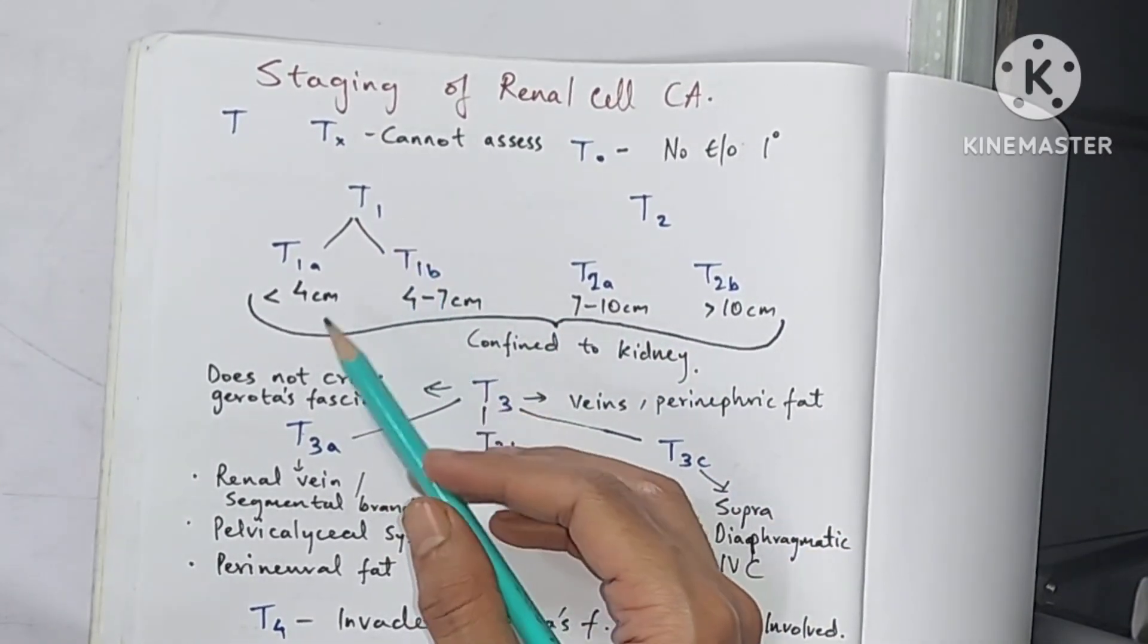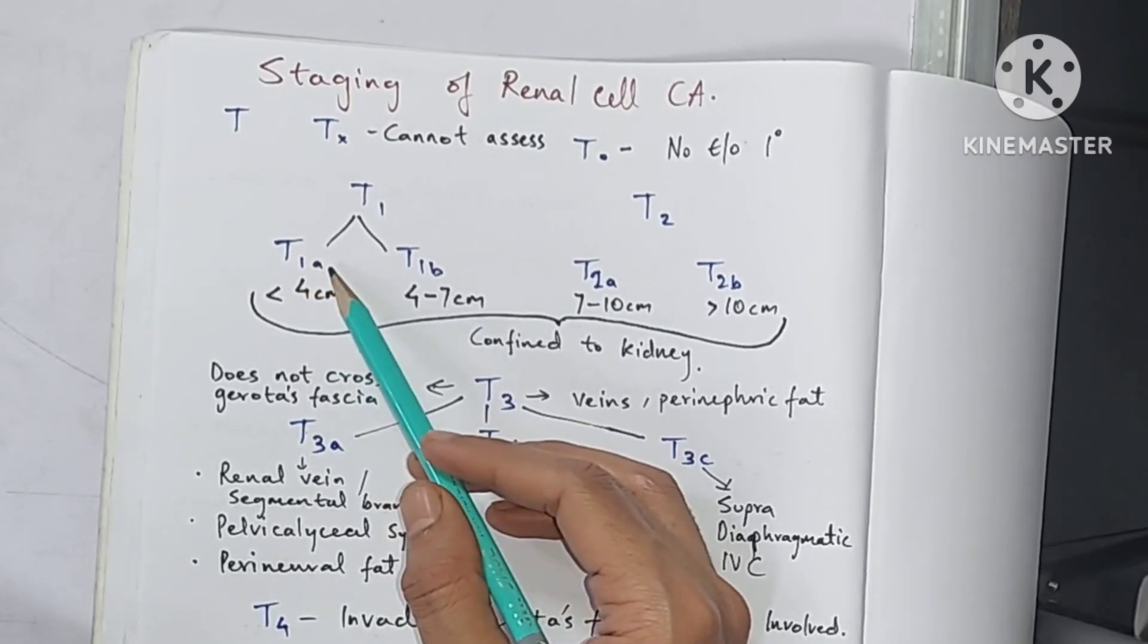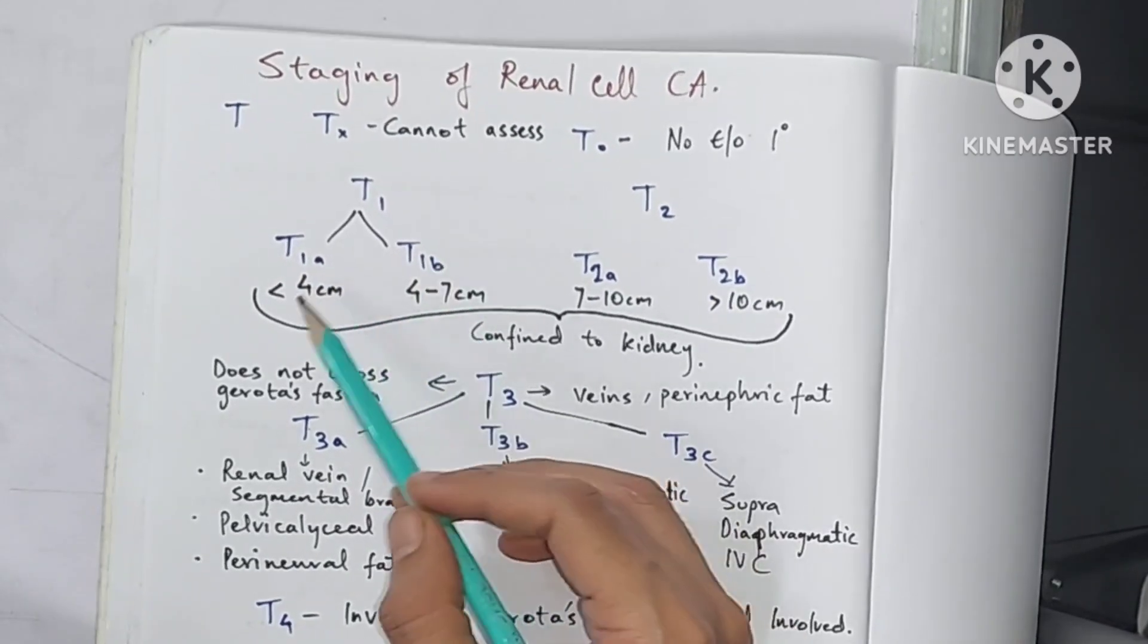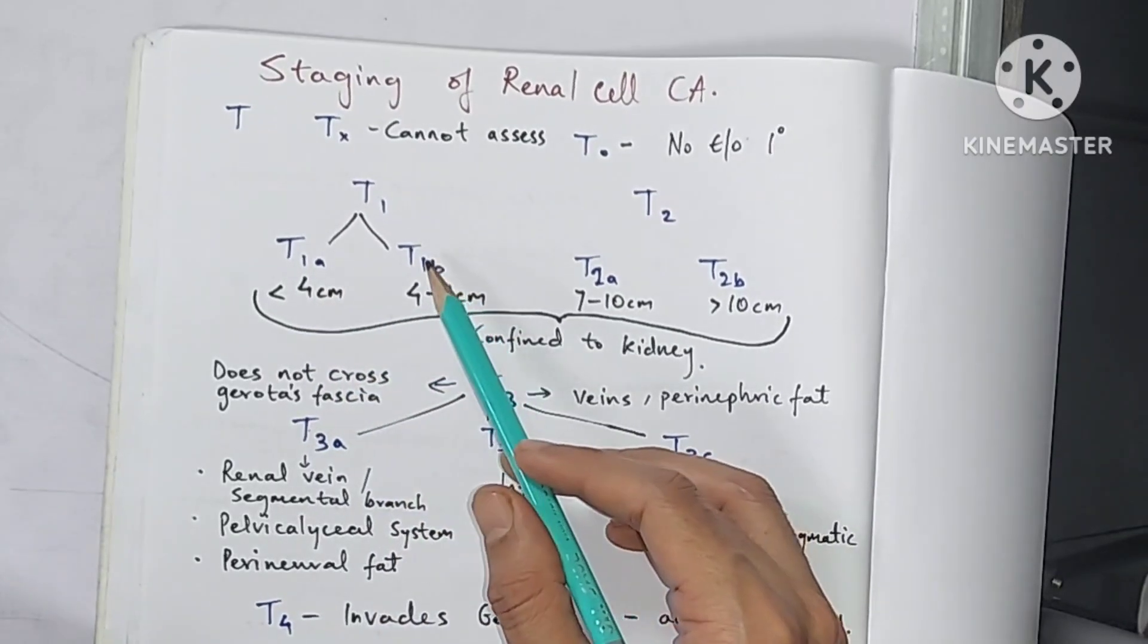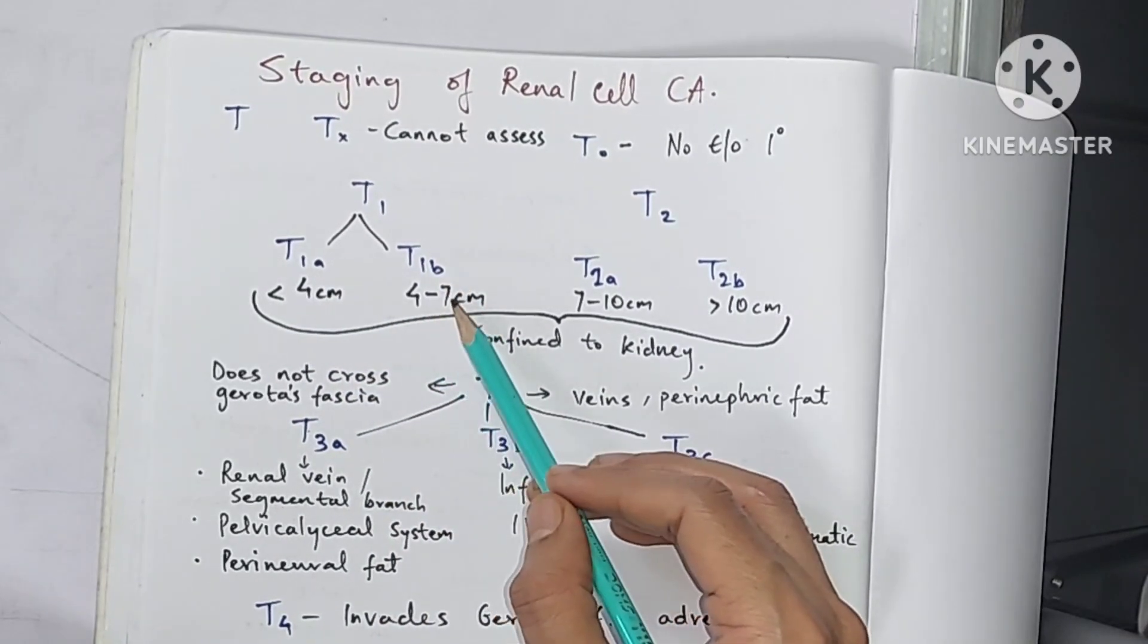Then T1 that is divided into T1a and T1b. T1a is when it is less than 4 centimeter, T1b when it is 4 to 7 centimeter.